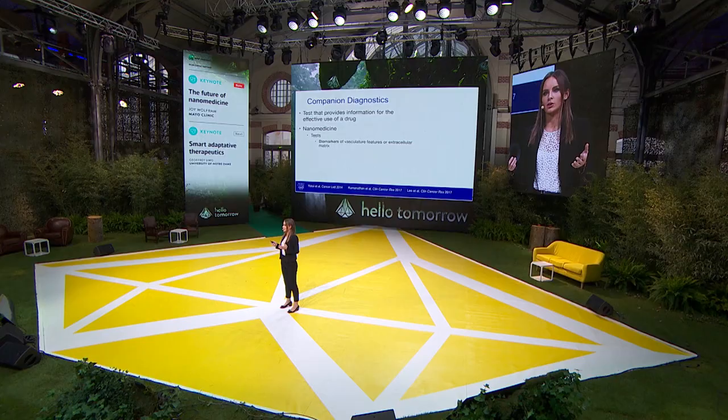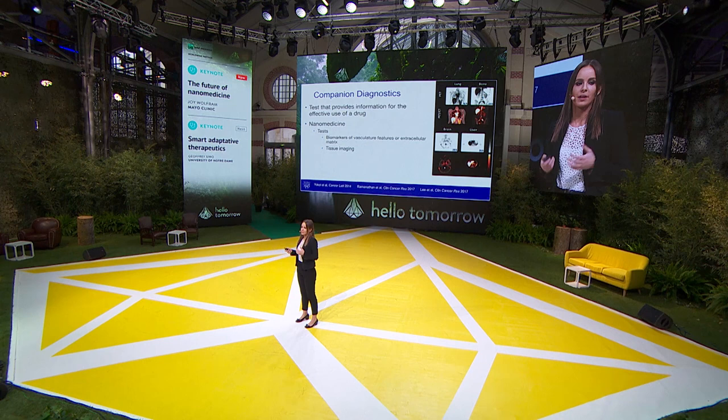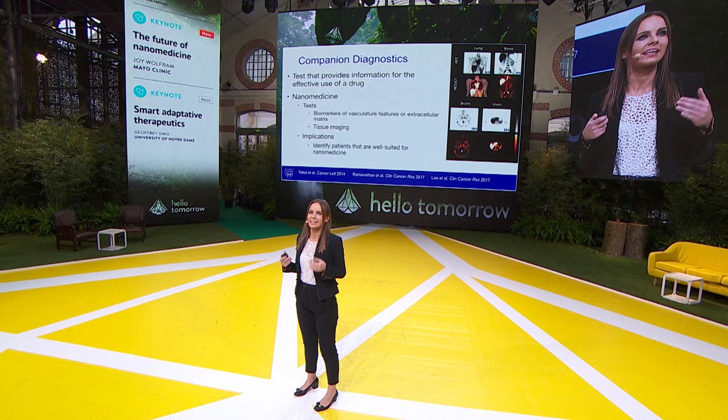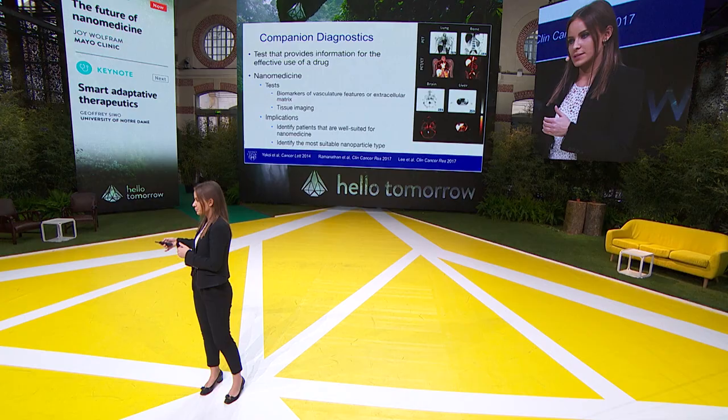The third promising direction is companion diagnostics — tests that provide information for effective use of a drug. For nanomedicine, these tests could be biomarkers about vasculature features or extracellular matrix content in diseased tissue, or tissue imaging techniques analyzed to give information about diseased tissue. This allows us to identify patients well-suited for nanomedicine — for example, imaging a patient's tumor to see large fenestrations, suggesting they would benefit. We can also match specific nanoparticle types to diseased phenotypes.